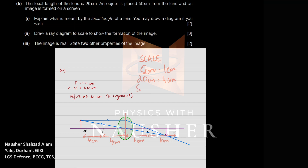The object is at 50 cm, which scales to 10 cm on the drawing — 2 cm beyond 2F. Draw the object as large as possible within the lens size. Draw one ray from the object straight through the optical center undeviated, and another ray parallel to the principal axis that passes through the focal point. Where these rays intersect is where the image forms — on the opposite side of the lens.